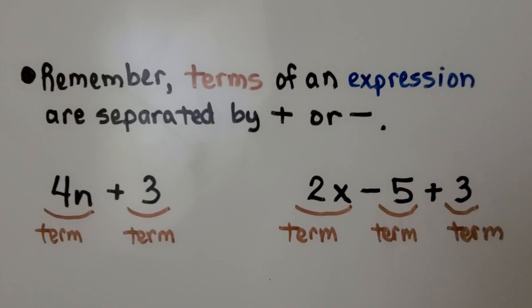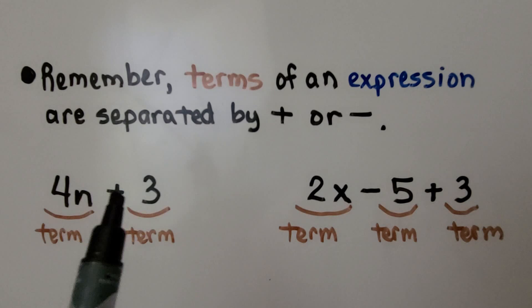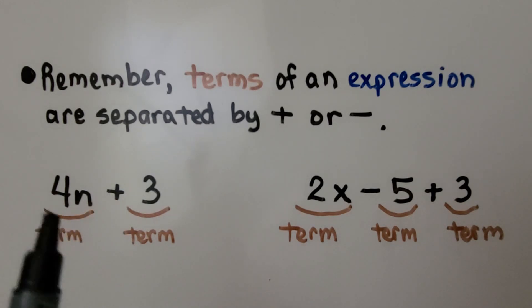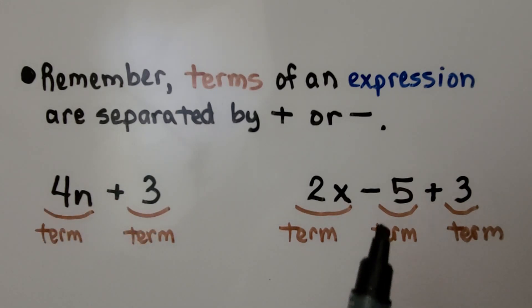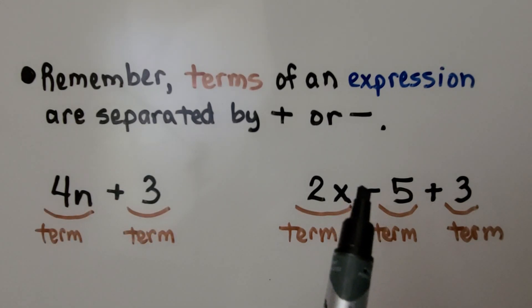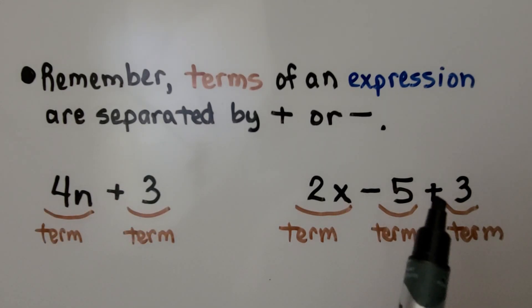Remember, terms of an expression are separated by a plus or minus. So here we have a plus sign, so here's a term and here's a term. Here we have a minus sign and a plus sign, so we have three terms.